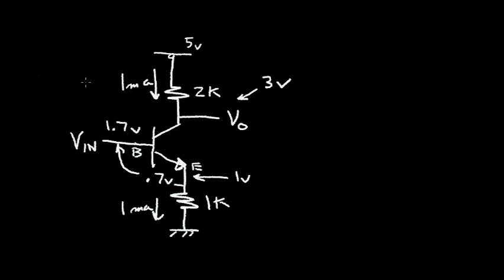So what happens if I change the input voltage? Instead of 1.7, let's say I set it at 1.8 volts. So I go up 100 millivolts or tenths of a volt. And I produce more current in this emitter. Now my current is 1.1 milliamp. And that current is essentially going to all flow in the collector. So I have 1.1 milliamp flowing through a 2K, which gives me an extra 200 millivolts. I give it 100 millivolts in, and I'm getting a 200 millivolt change in V out.